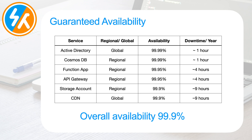Active Directory and Cosmos DB have an availability SLA of 99.99%. Function app and API Gateway have an availability SLA of 99.95%. Storage account and CDN have an SLA of 99.9%. If we convert these SLA percentages into hours, 99.9% translates to 9 hours of downtime per year, 99.95% means 4 hours, and 99.99% means 1 hour per year.